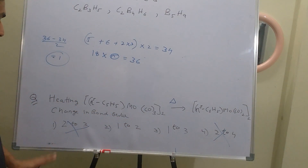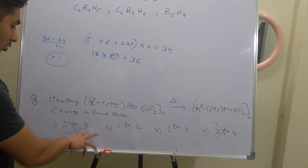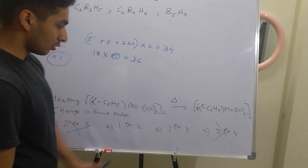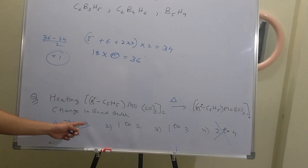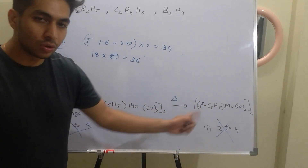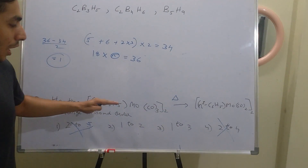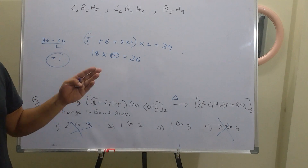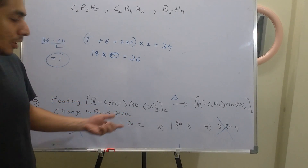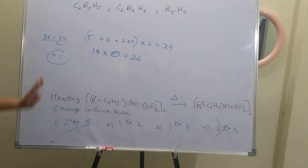We are left with options 1→2 or 1→3. Again, look at the options carefully. If solving one of them uniquely determines the answer, go for it. In this case, the bond order for the heated compound was given as 3 in one option and different in another, so we need to calculate the second compound to confirm.